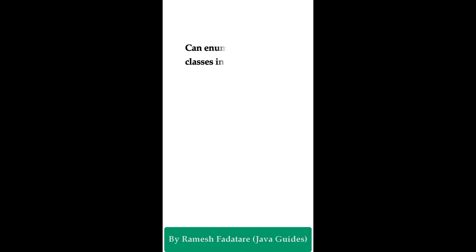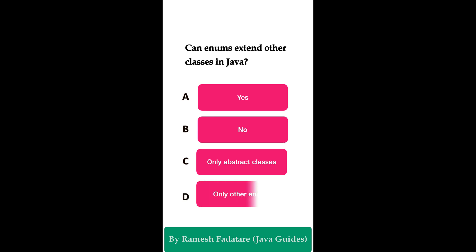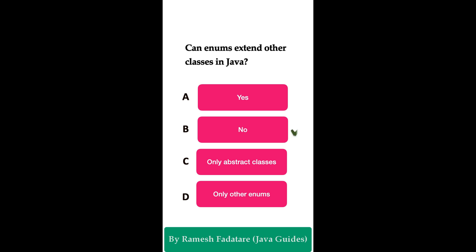Welcome to Java quiz series. Here is one more question: Can enums extend another class in Java? Option A: yes. Option B: no. Option C: only abstract classes. Option D: only other enums. The correct answer is option B: no. In Java, enums cannot extend other classes because they already implicitly extend the built-in Enum class. However, they can implement interfaces.